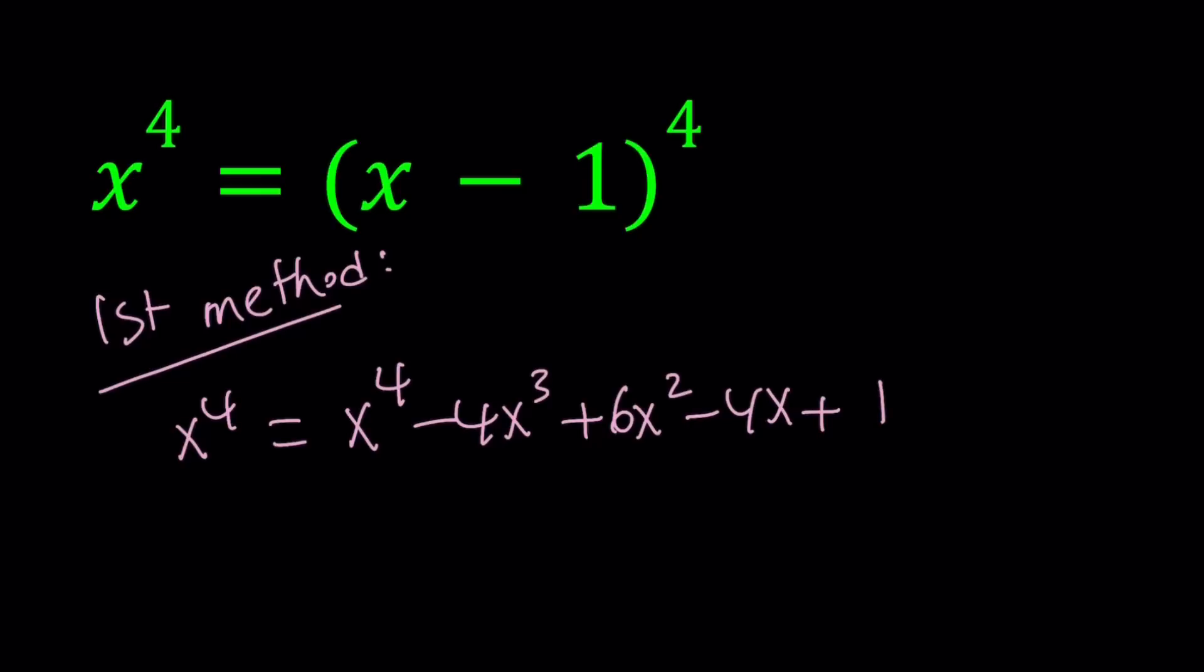Remember in the previous video, we talked about the binomial formula for a plus b to the fifth power. This is the formula for a plus b or a minus b to the fourth power. So the signs alternate because b is negative. Anyway, so we have the following. And x to the fourth nicely cancels out.